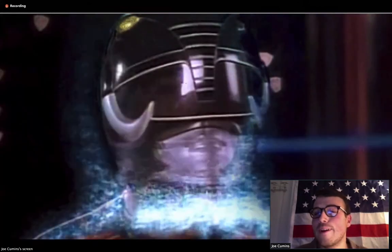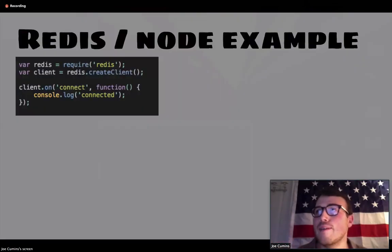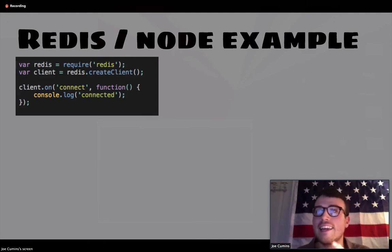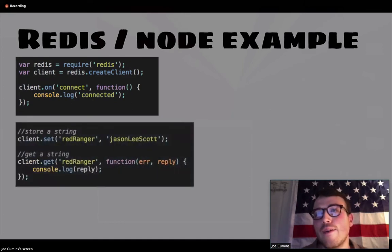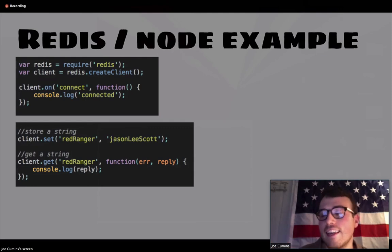Let's put on our node thinking caps and look at a really simple example of how we use Redis and Node together. This shows how these commands work. Here we're setting up and creating a Redis client, connecting it to our local Redis instance. Here's how we would set a string — the key would be the Red Ranger string, and then the value would be Jason Lee Scott. That's an example of how you set a string, and then you can use a getter to get it.